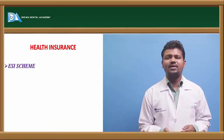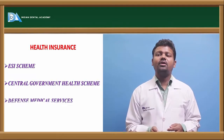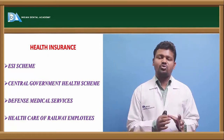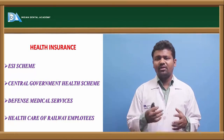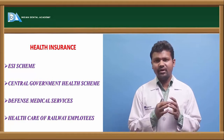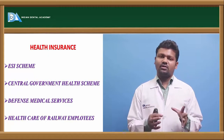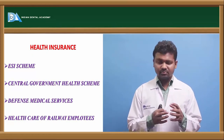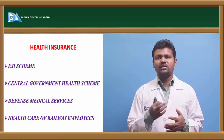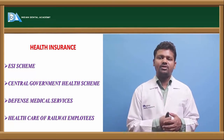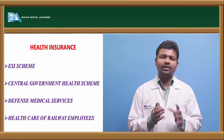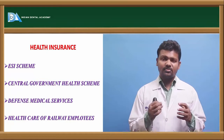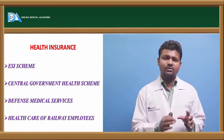Coming to health insurance schemes, these include the ESIC scheme, government healthcare schemes, defense healthcare schemes, and railway employee healthcare schemes. The central government provides all treatment across all classes. Then there are defense medical services, which are provided solely and especially to the armed forces. Railway employees also have their own hospitals with special dentists and qualified specialists, same as for the medical services.